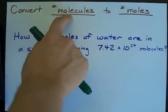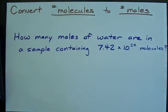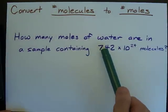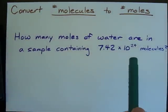How do you convert a number of molecules into a number of moles? We're going to work the example: how many moles of water are in 7.42 times 10 to the 24 molecules?